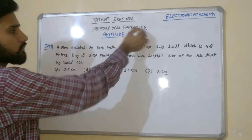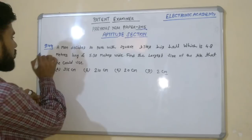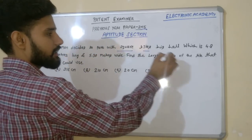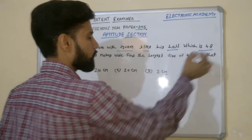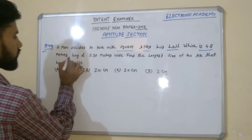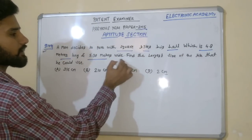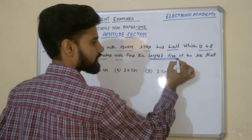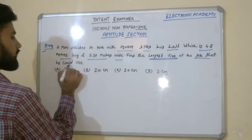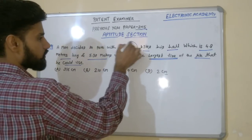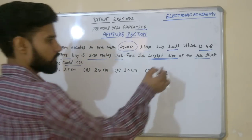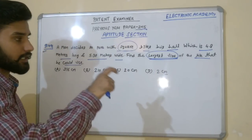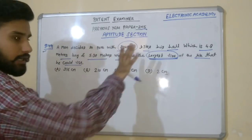Okay, we are talking about the previous year 2015. So we are talking about the 49th question: a man decided to pave with square tiles his hall which is 4.8 meters long and 5.38 meters wide. Find the largest size of the tile that he could use. There are two things — square tiles — and he is asking how large a size of the square tiles can be used.